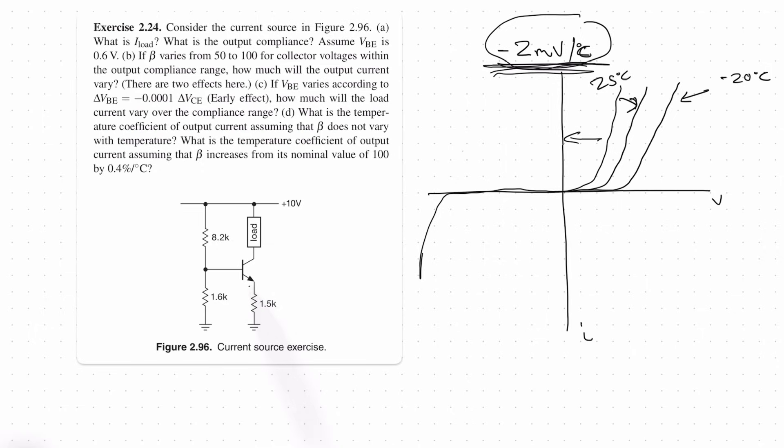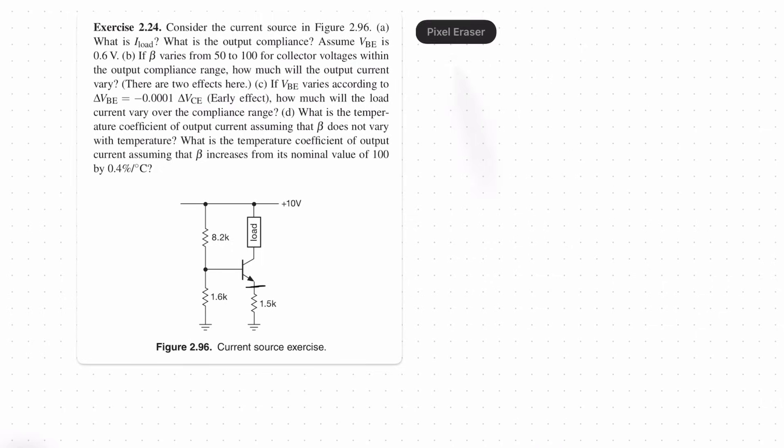So basically what happens is this voltage will change by 2 millivolts for every degree C. And we know that output current, Iload, is equal to IE, assuming base current is zero. We know that the load current is approximately equal to the emitter current. And we know that the emitter current will change as the VBE voltage will change. So this point is going to be fixed at 1.6 volts. And this will change with temperature by 2 millivolts per degree C.